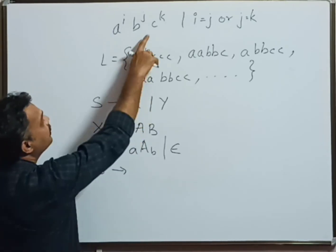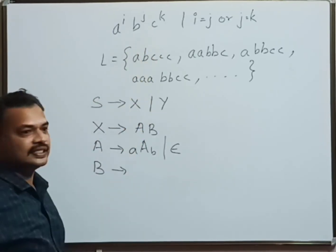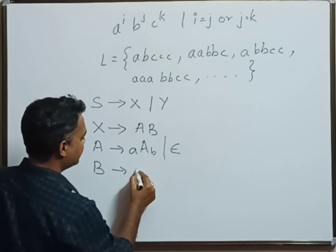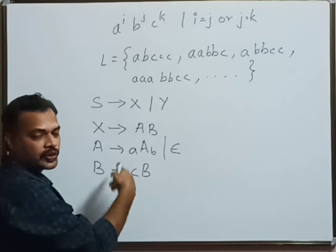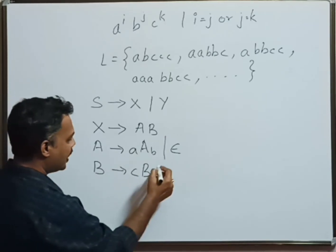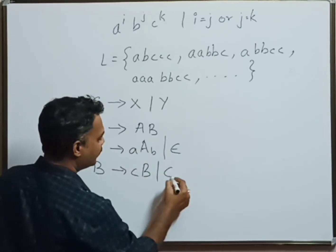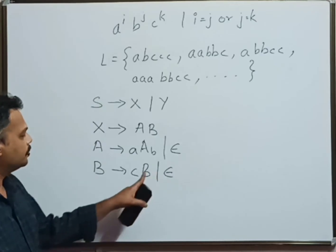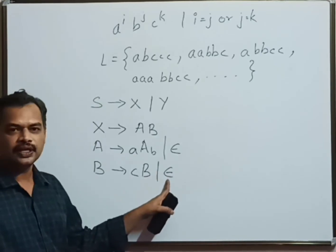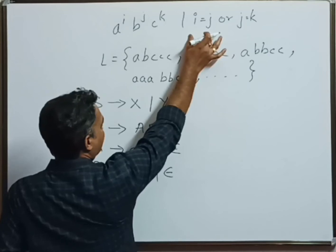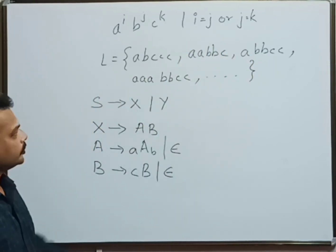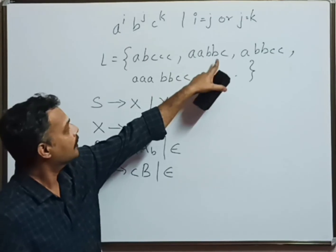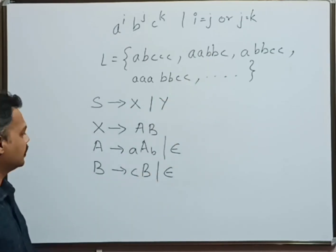Now we have to deal with the number of occurrences of c, and it is B goes to cB. Once again, we produce number of c's recursively, and this has to be stopped with epsilon. So B is ultimately replaced with epsilon. That gives us the first condition, strings that fall under the first category.